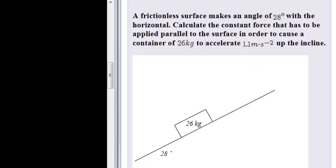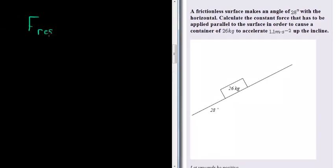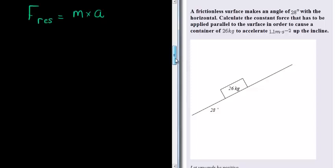Now if there is acceleration, we know that the resultant force is equal to the mass times that acceleration. So we can very easily calculate the resultant force that is causing it to accelerate upwards. But that's not the applied force — the resultant force is the vector sum of all the forces, including the applied force. So we will have to look at all the forces involved here.